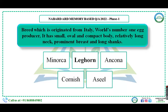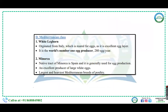A breed projected from Italy, world's number one egg producer, with a small oval compact body, relatively long neck, prominent breast, and long legs — the answer is Leghorn. Leghorn originated from Italy and is raised for eggs as it is an excellent egg layer and the world's number one egg producer.